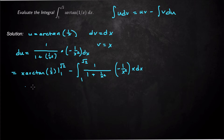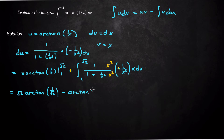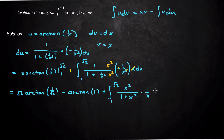I'll plug the bounds into the first part x·arctan(1 over x). I can pull the negative out front, making the two negatives a positive. In the fraction I'll multiply top and bottom by x² to simplify. After that simplification, the x and x² terms reduce, leaving x over (1 plus x²) inside the integral.